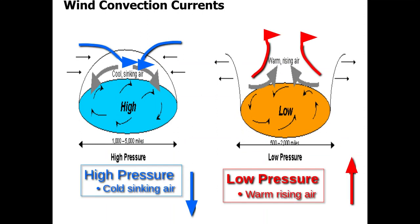We're going to take these specific heat properties of land and water and now create high pressure systems, low pressure systems, and look at how wind forms. High and low pressure systems can extend very wide geographically — for example, 1,000 to 5,000 miles in diameter. In a high pressure system, we have cold, sinking air. In a low pressure system, we have warm, rising air. Wind is created from unbalanced air pressures caused by unequal heating of the Earth's atmosphere.